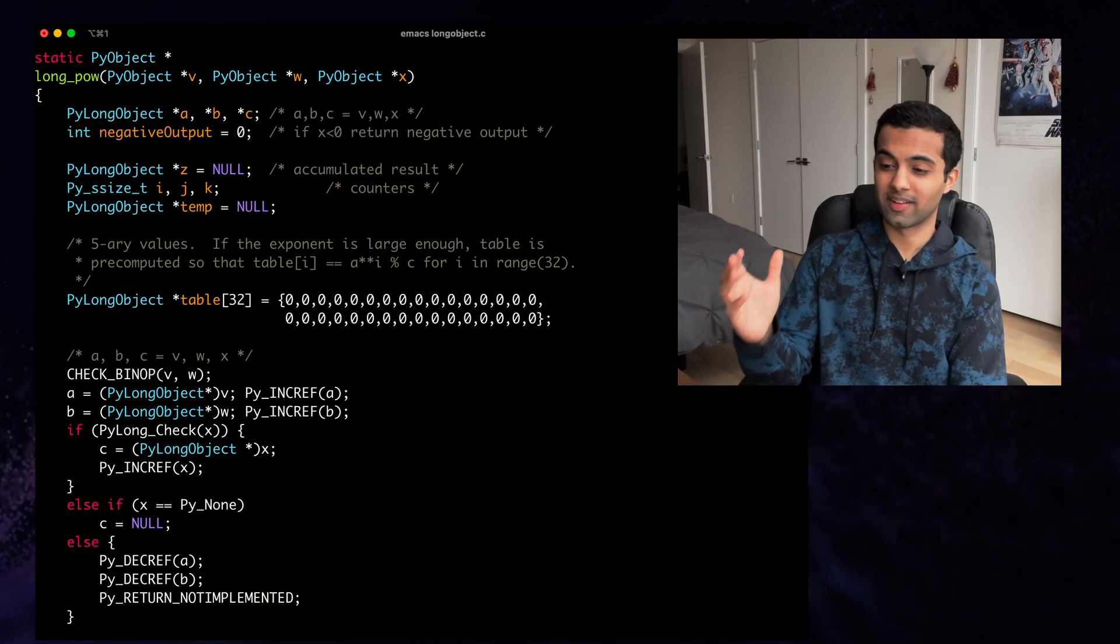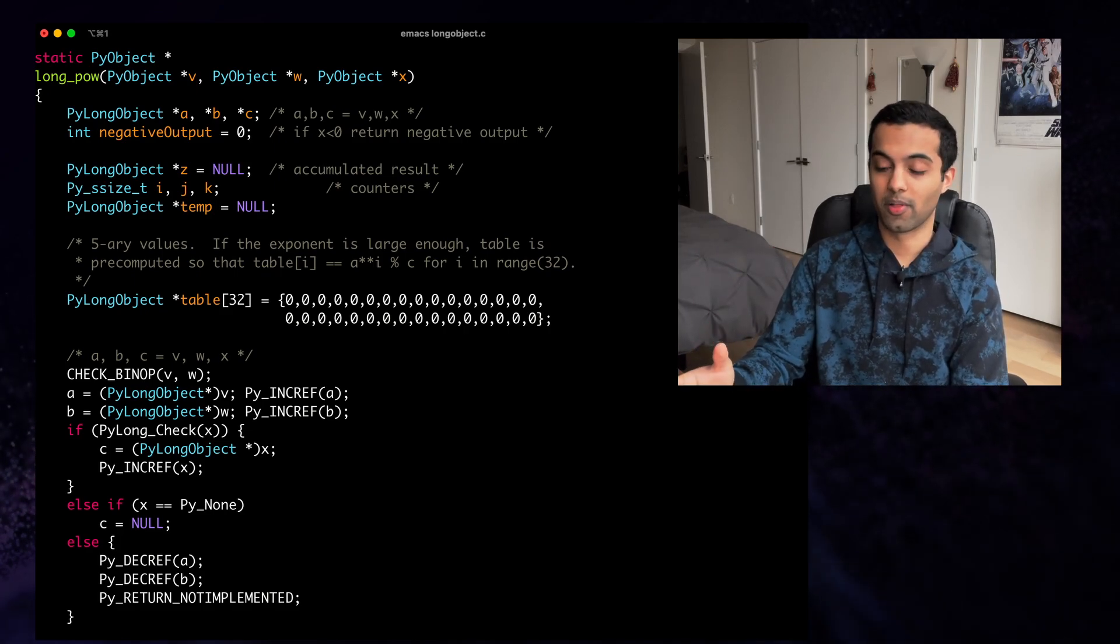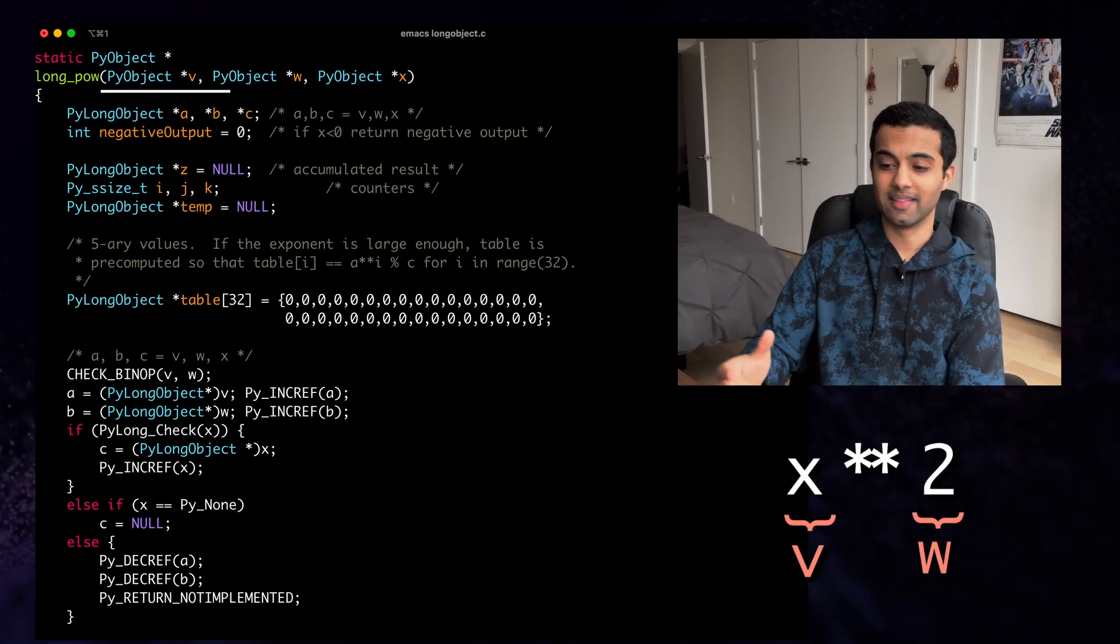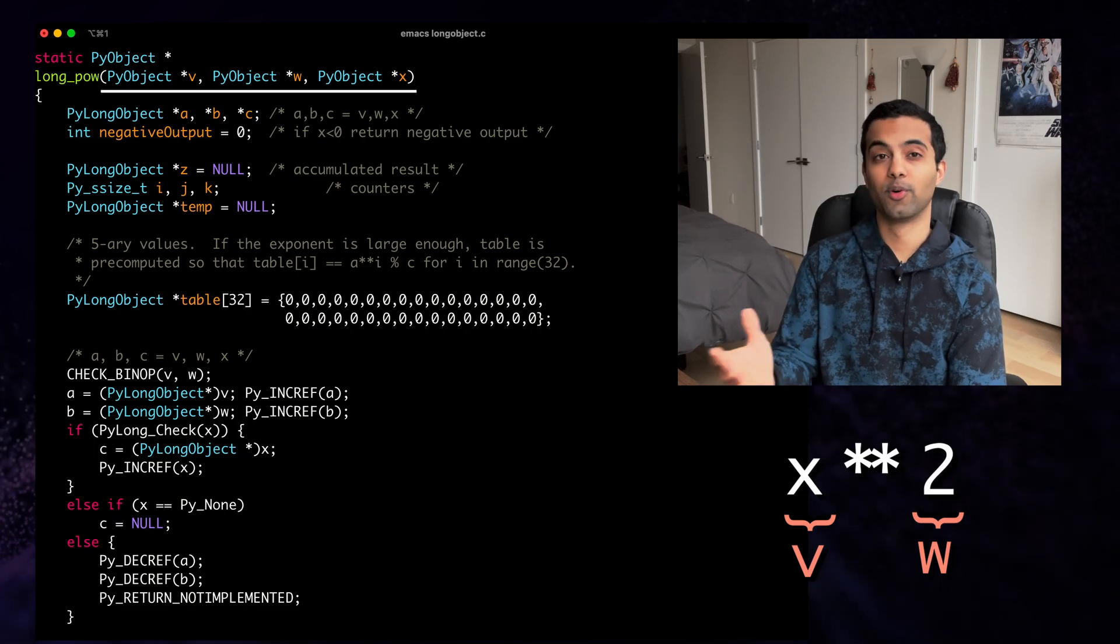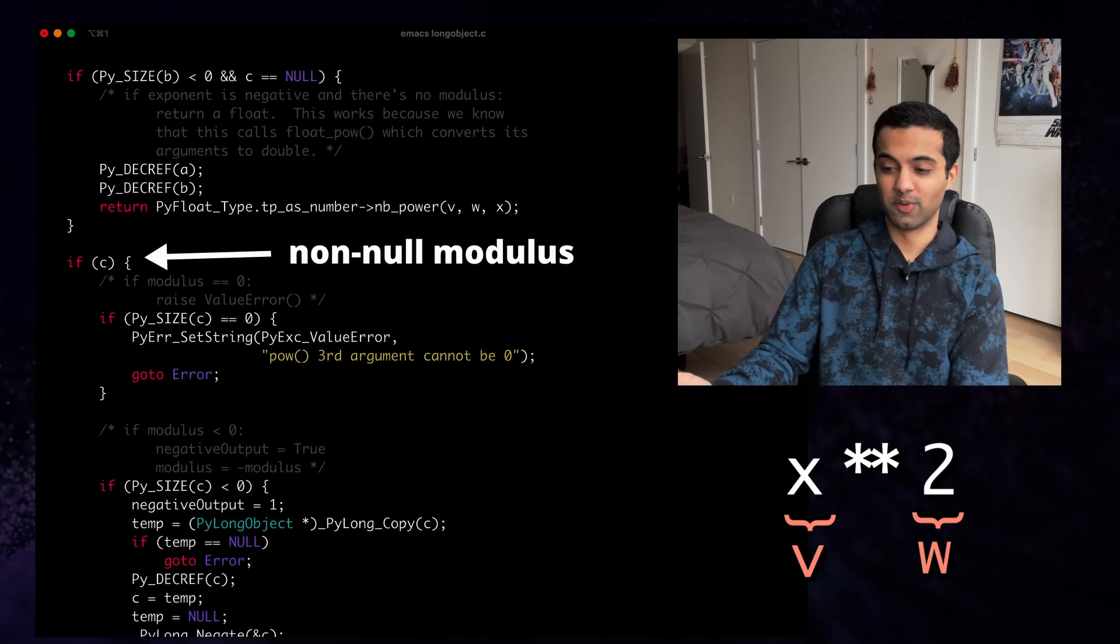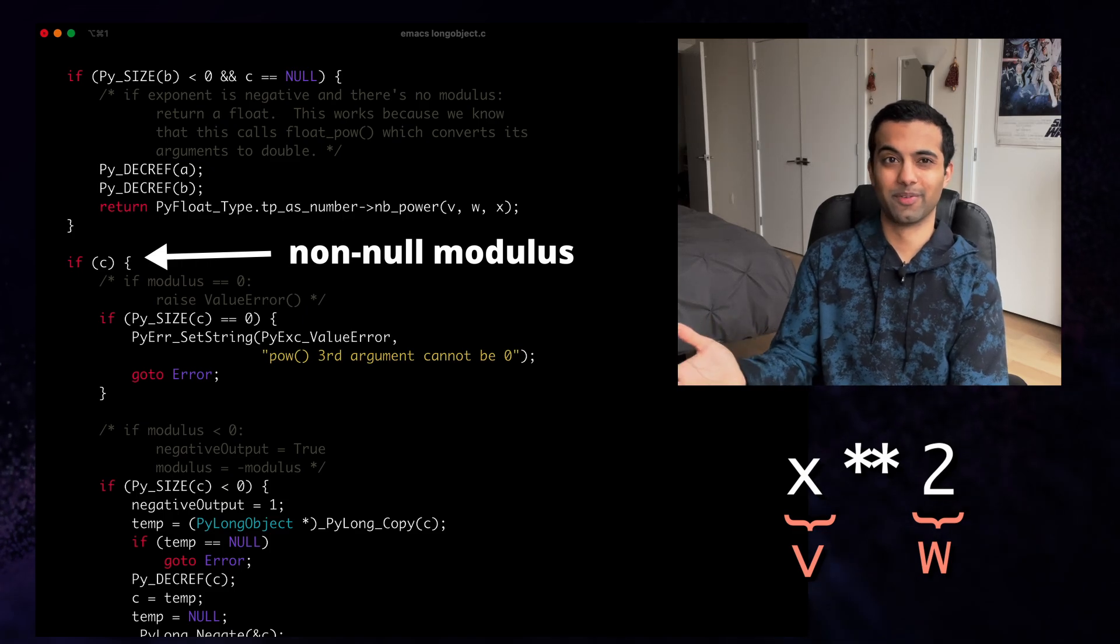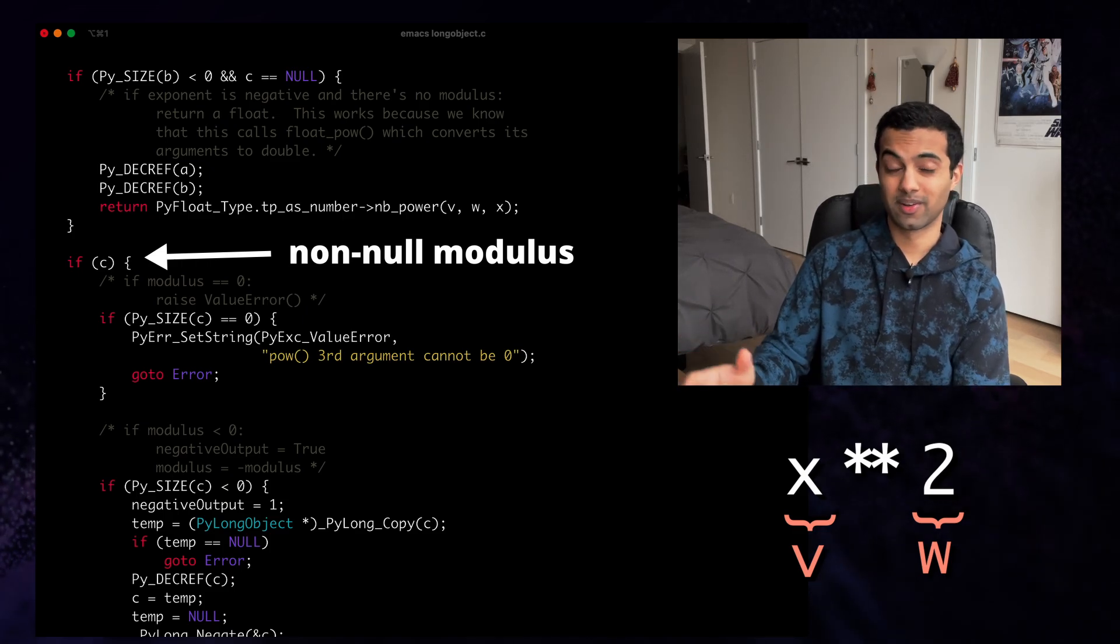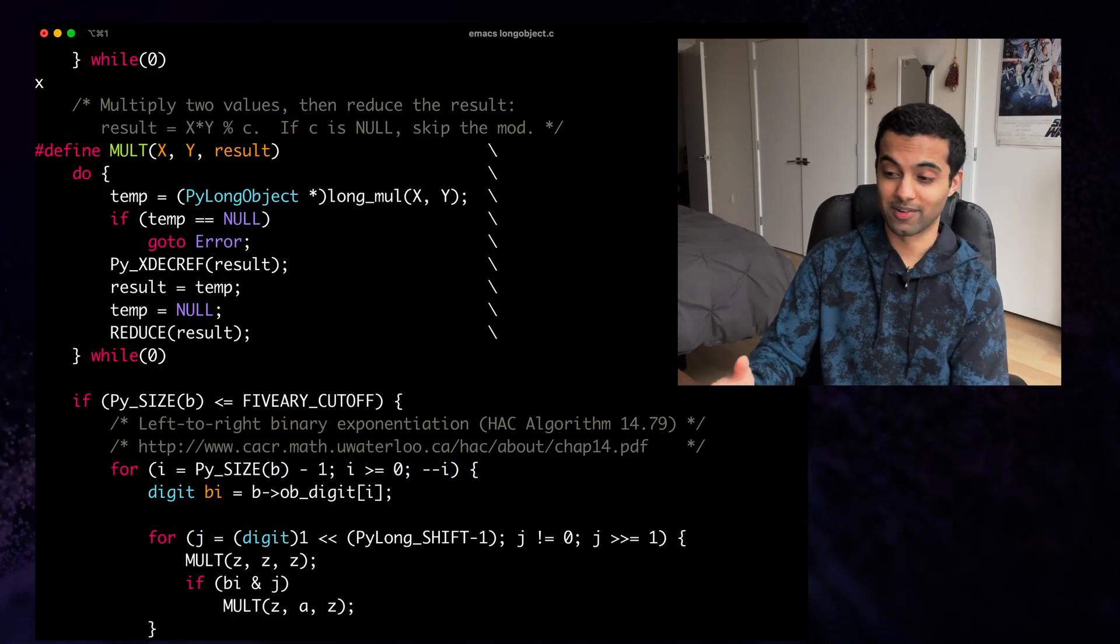When we pull up this function, you'll notice that it's a lot longer and much more involved than long_mul. It starts off by taking in the base, exponent, and modulus before doing the usual input type checks and memory management. It also handles a few special cases, but these aren't really relevant for our use case. And eventually, once we skip past all of these, we'll get to core exponentiation logic,